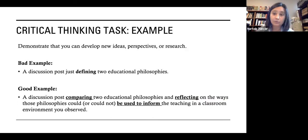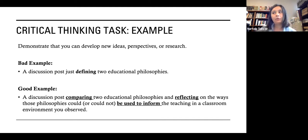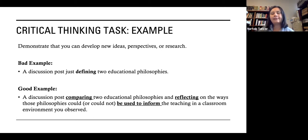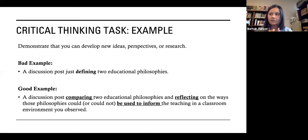Let's look at a bad example and a good example of critical thinking in a discussion essay or post. A bad example would be a discussion post that just defines two educational philosophies. That's based on research, but there isn't anything new — there is none of the writer's own thinking in there. That discussion post does not require any critical thinking.